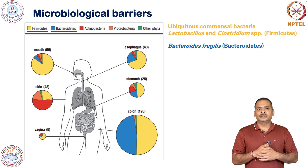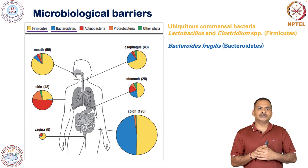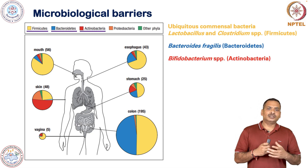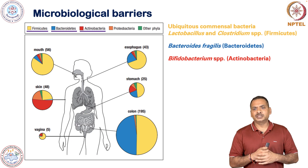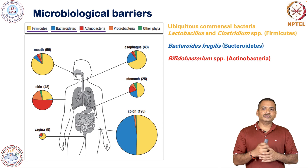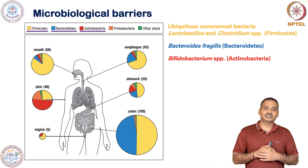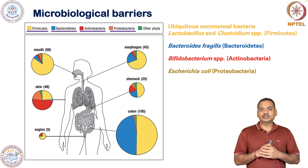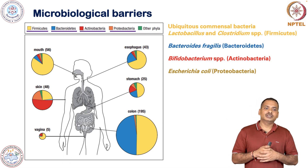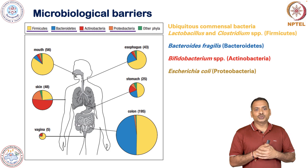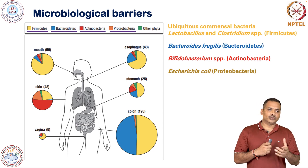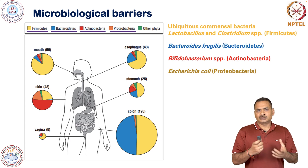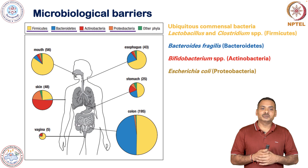Bacteroidetes constitutes another large mass of bacteria. Actinobacteria includes Bifidobacterium species and is present in large numbers, particularly on the skin. Proteobacteria includes E. coli species — their numbers are greater in the esophagus and stomach and lower in the colon, vagina, and mouth. It is very interesting that E. coli is present in our body as commensal bacteria.